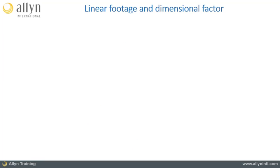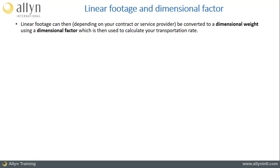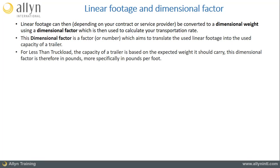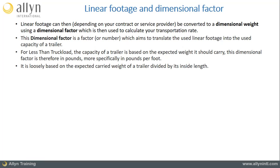As mentioned earlier, once you have calculated your linear footage, it can be used directly to establish your price, or it can be converted to a dimensional weight using a dimensional factor, and this weight is then used to calculate your transportation rate. This dimensional factor aims to translate the used linear footage into the used capacity of a trailer. As the capacity of a trailer is generally expressed in weight capacity, this factor is in pounds per foot, reflecting how much capacity of the truck is used up by a linear foot. It varies from one provider to another.